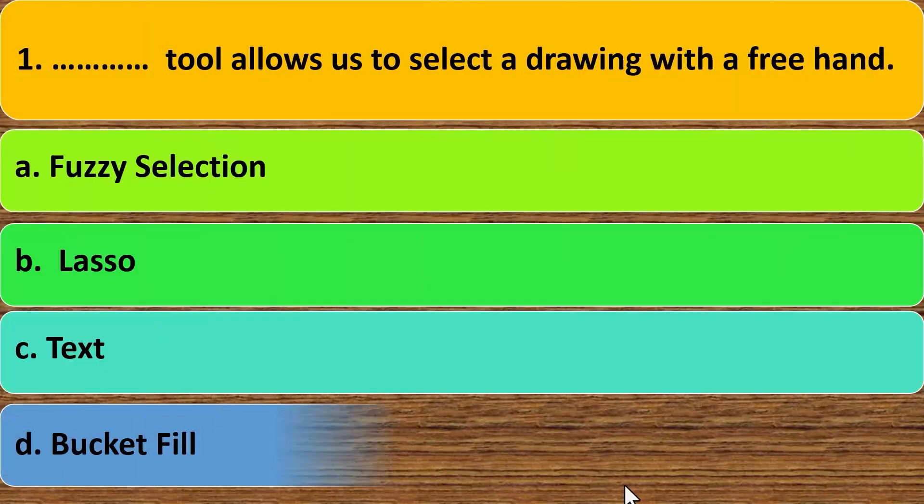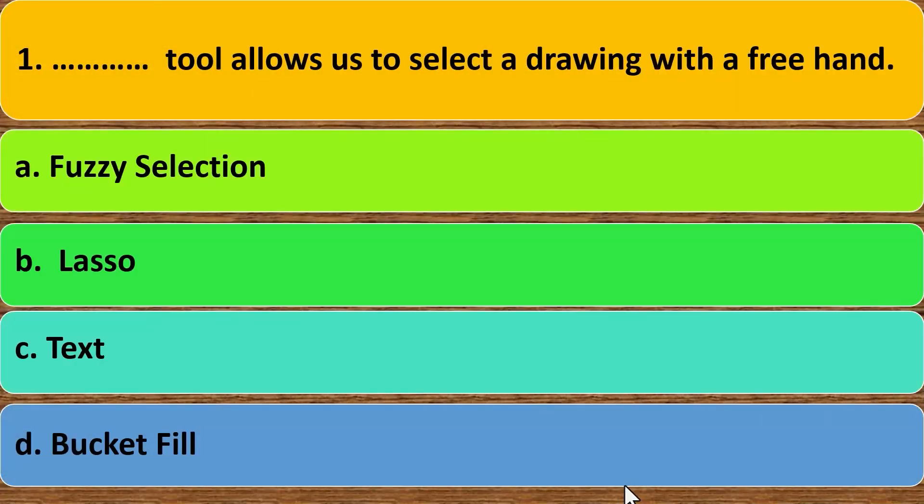Multiple choice question. First, dash tool allows us to select a drawing with a free hand. A. Page selection. B. Lasso. C. Tap. D. Buckle. Correct answer is B. Lasso tool.